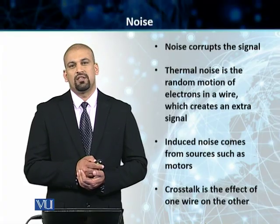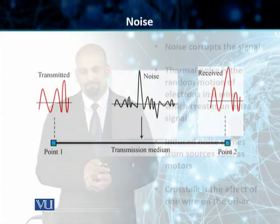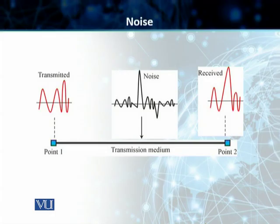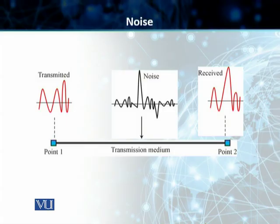Let's go to the slide and discuss this in further detail. As you can see on the slide, we have the original signal which is transmitted, and we have a noise or extra signal. Let's suppose it's transmitted because of thermal noise. When these two signals meet, we receive something at the destination which is not an exact replica of the originally transmitted signal.